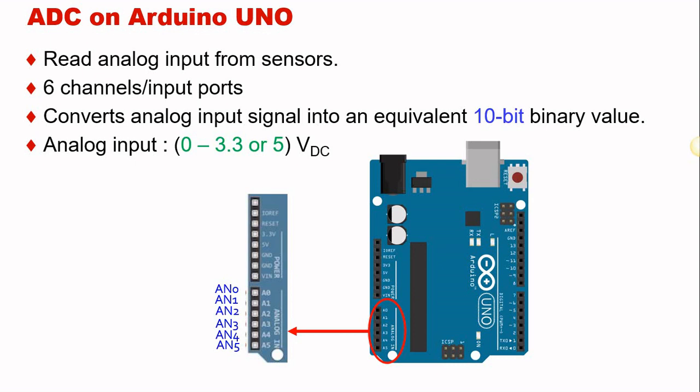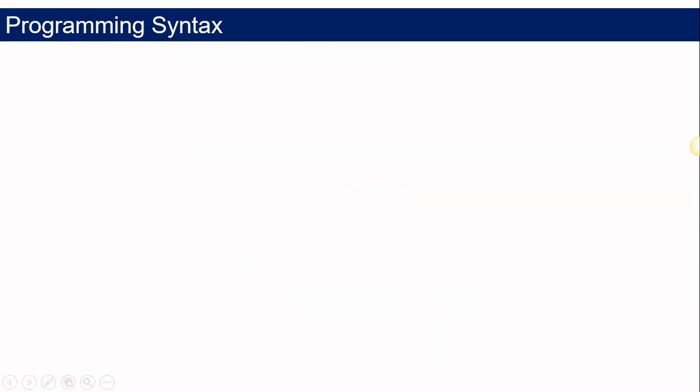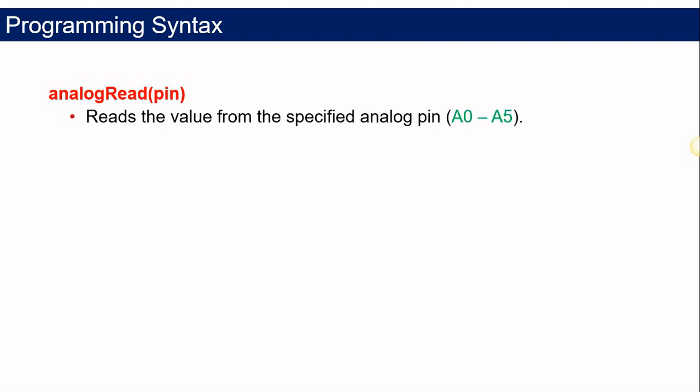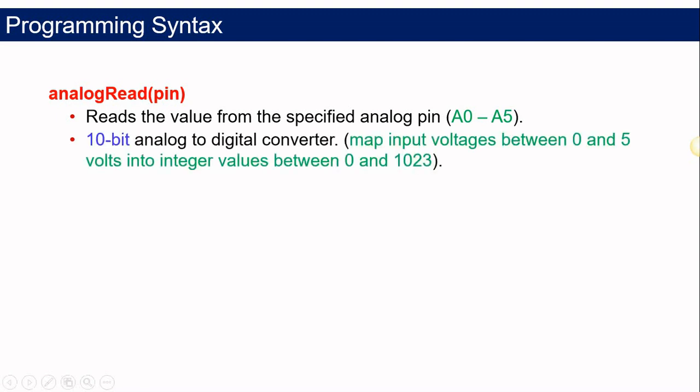Here is the programming syntax for the ADC to be used on your Arduino Uno board. We are going to use the analogRead(pin) function, which is the main function to read the analog signal. You can choose the pin number from A0 to A5, and then it's going to implement the 10-bit analog to digital converter.